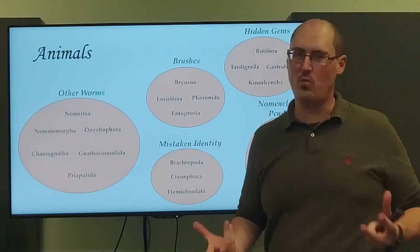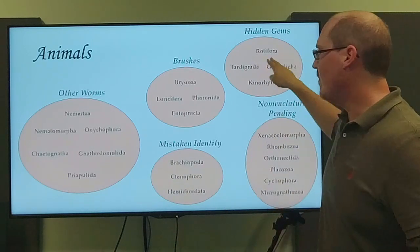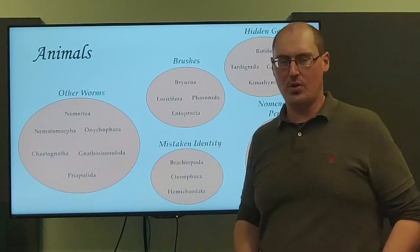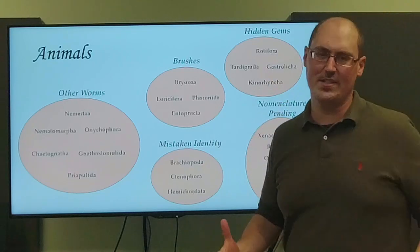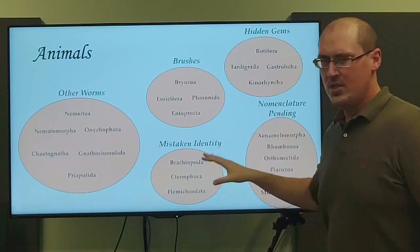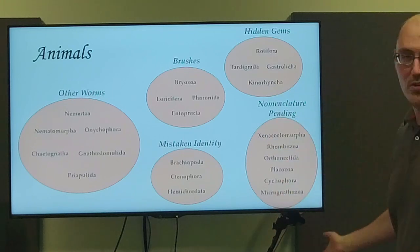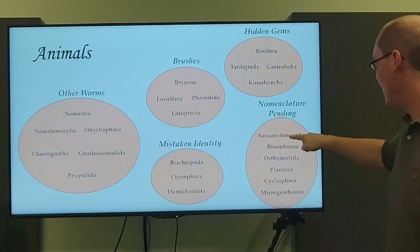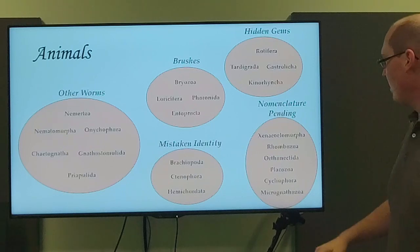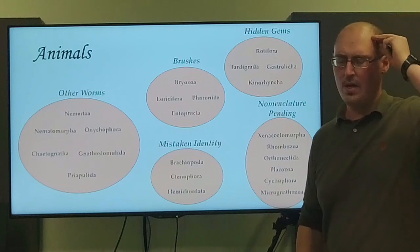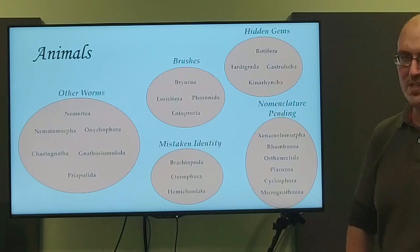I'm calling these hidden gems. These are weird and wonderful invertebrates, phyla that are just so cool that you really should know about. Rotifera are the wheel bearers. Tardigrades, which you probably have actually heard of, the water bears, very charismatic. Gastrotricha, the hairy bellies. And then my personal favorite, the Kinorhyncha, the mud dragons. And then finally, the smallest, rarest, least well-known, they don't even have common names to describe them. Nomenclature pending. So I've created nomenclature for you. Xenoturbellida, Rhombozoa, Orthonectida, Placozoa are the blob animals. Cycliophora are the lobster lice. And Micrognathozoa with one species are the jaw worms.